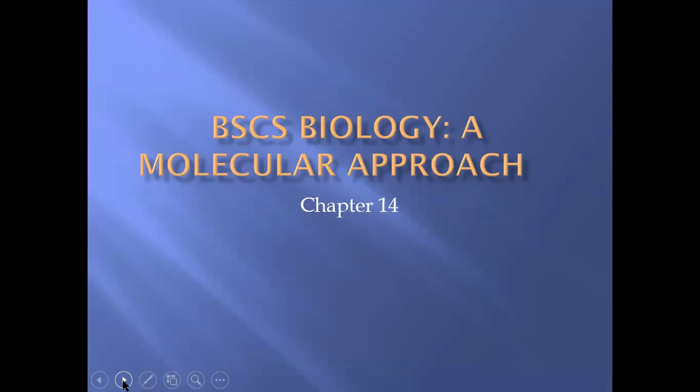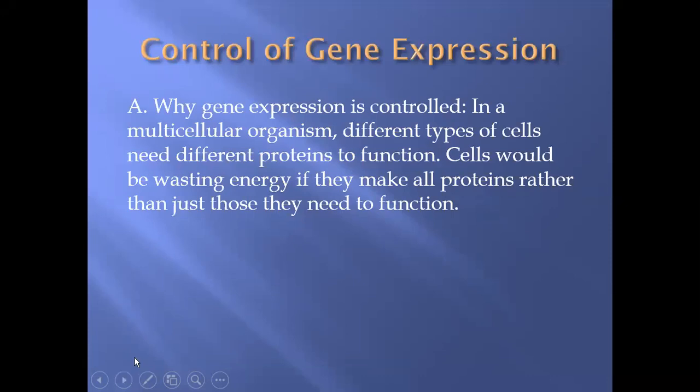This principle is called genetic control or gene expression. Gene expression means different types of cells need different proteins, and we don't want them to waste energy. If a gene is expressed, that means it's on — it's currently being used to produce the protein that it makes. If a gene is not expressed, it is turned off and it's not being read by RNA polymerase.